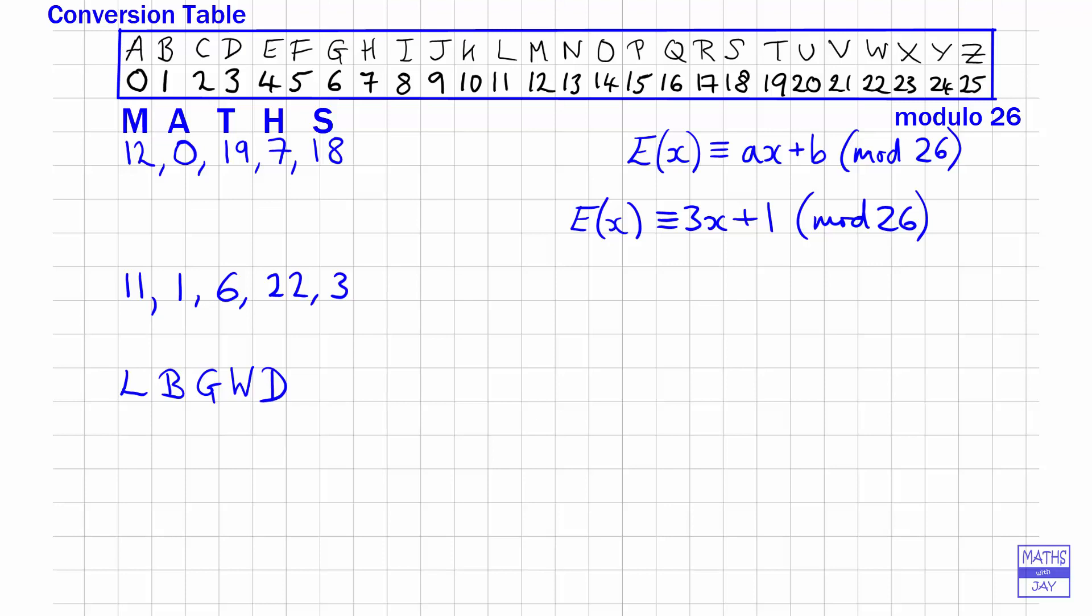The idea is we'd send that code to somebody and they'd need to decipher it using a deciphering rule. Looking back at our enciphering rule, we were multiplying by 3 and adding 1. If this was ordinary arithmetic, you'd reverse that by first subtracting 1, then dividing by 3.